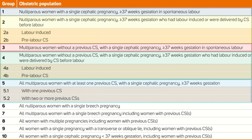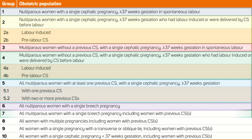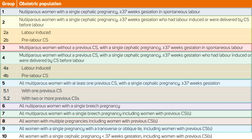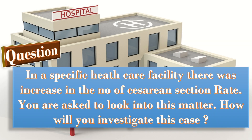Up to group five we have women having single term pregnancies, while group ten covers preterm pregnancy. An important practical question is: if in a specific healthcare facility there is an increase in the number of cesarean section rates, how would you investigate this matter?